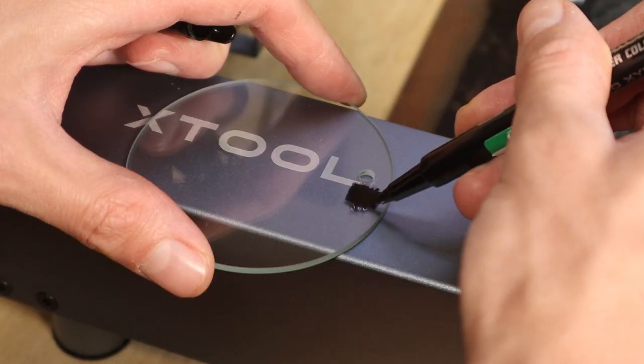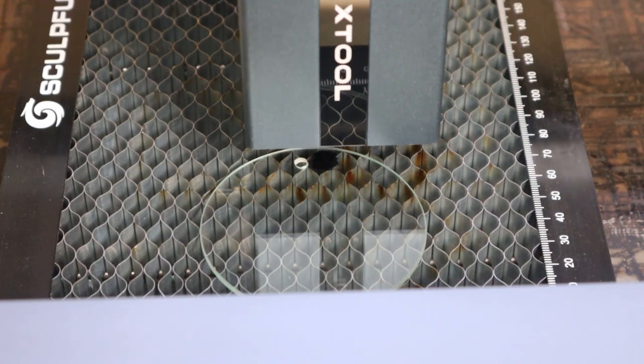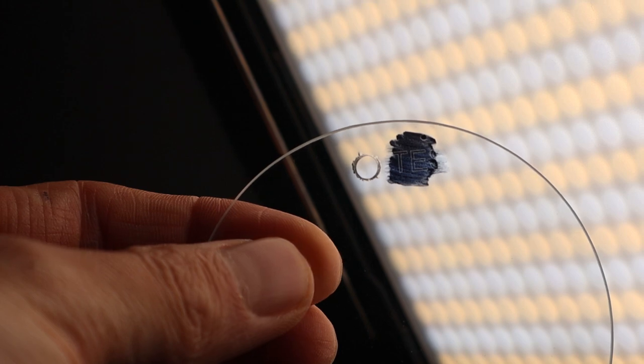Next, I tried to engrave transparent glass, which was unsuccessful even if the surface was painted black. This is where blue laser can be better if the surface is blackened.